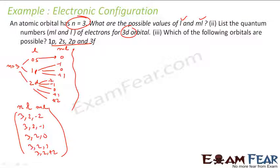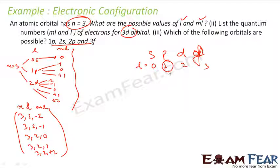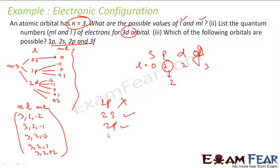Now the next question: is 1p possible? No, because for p, l equals 1, and the minimum value of n is 2. So 1p is not possible. Is 2s possible? Yes — for s, l equals 0, so minimum n is 1; anything from 1s upward is possible. Is 2p possible? Yes — for p, l equals 1, minimum n is l+1 equals 2, so 2p is possible. Is 3f possible? For f, l equals 3, so minimum n is 4. Therefore 4f is the minimum; 3f is not possible.